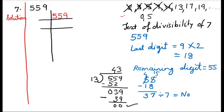Then by how much is it divisible? By 43. So we write: 13 times 43 equals 559. Now 43 is a prime number — 43 ones are 43. So what are the prime factors of 559? 13 multiplied by 43. Did you understand how to solve?